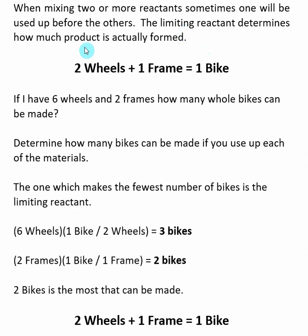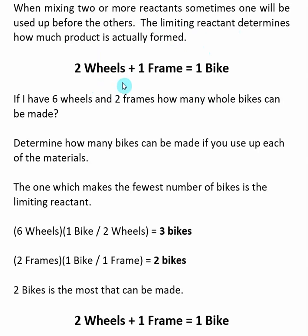In a limiting reactant problem, what we want to do is determine which of the reactants is the limiting reactant, and then determine how much product is being formed. We're going to look at a simplified reaction where two wheels plus one frame makes one bike. Even though this is simplified, it still represents a reaction, and the steps we use to solve it are exactly the same as when solving limiting reactant problems with chemical reactions.